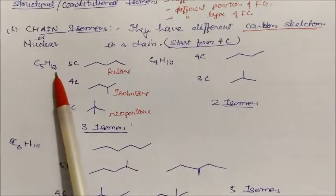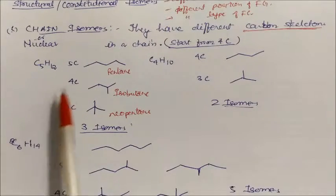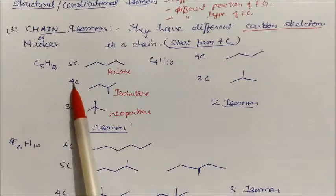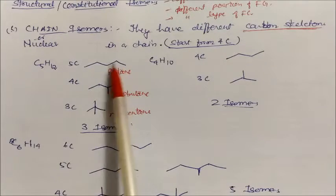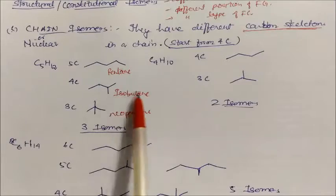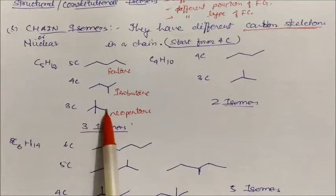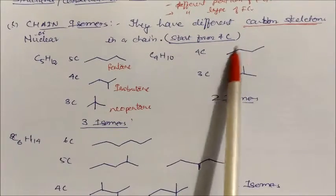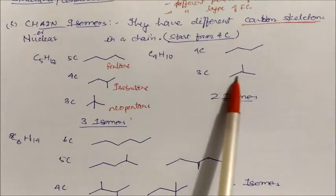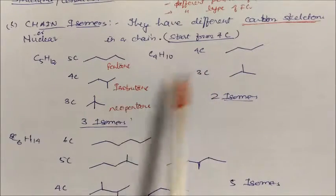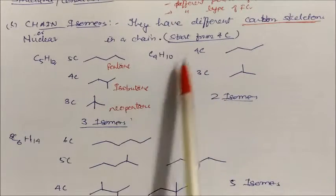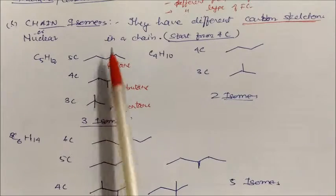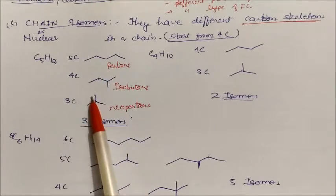Let's take an example: C5H12 pentane. First take the longest five-carbon chain, then four carbon — one carbon is broken and joined to make a branch, becoming isopentane. Similarly, butane has two isomers: one is the four-carbon chain and the other is the three-carbon chain. Always try to form isomers by decreasing the number of carbons in the main chain — it is better to take the decreasing number.